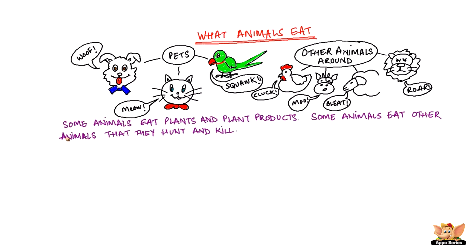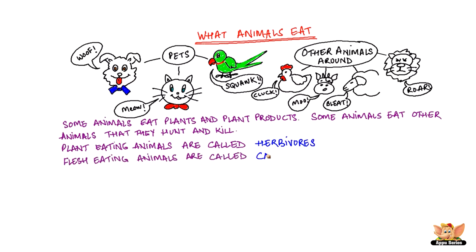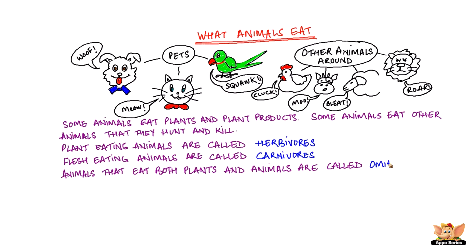There are some people who eat just plant products and others that eat both plants and animal food products. Similarly, we have animals that eat plants and plant products, and some animals that eat other animals that they hunt and kill. The plant-eating animals are called herbivores, while the flesh-eating animals are called carnivores. Animals that eat both plants and animals are called omnivores.